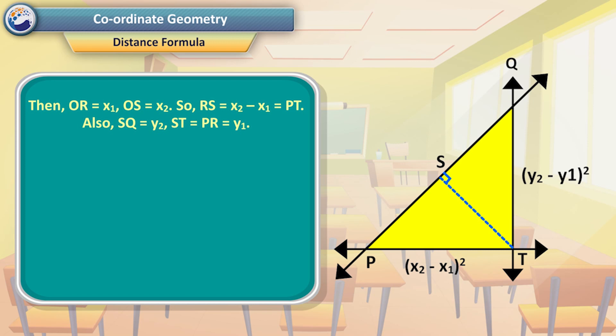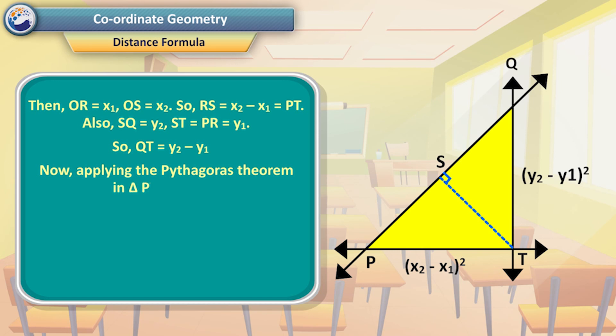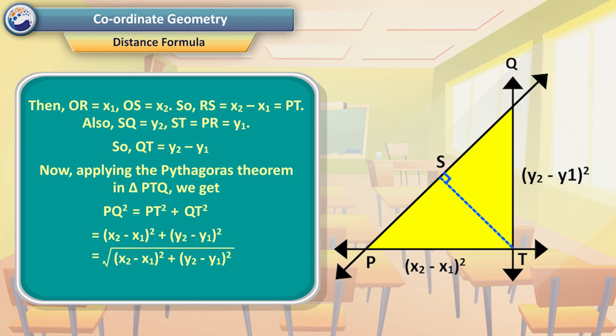Also, SQ = y₂, ST = PR = y₁, so QT = y₂ − y₁. Now, applying the Pythagoras theorem in triangle PTQ, we get PQ² = PT² + QT² = (x₂ − x₁)² + (y₂ − y₁)². Therefore, PQ = √[(x₂ − x₁)² + (y₂ − y₁)²]. This is called the distance formula.